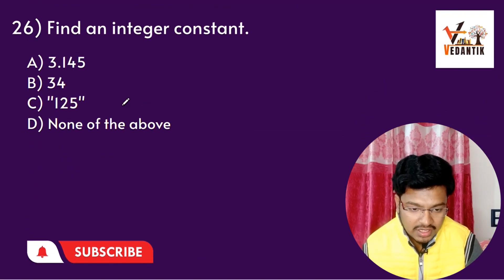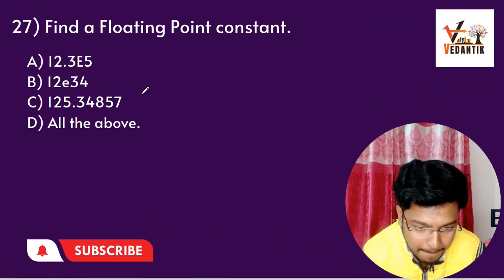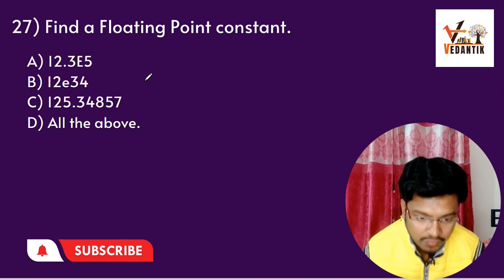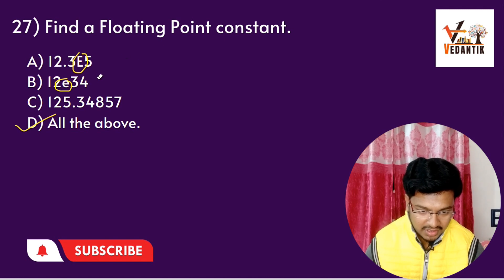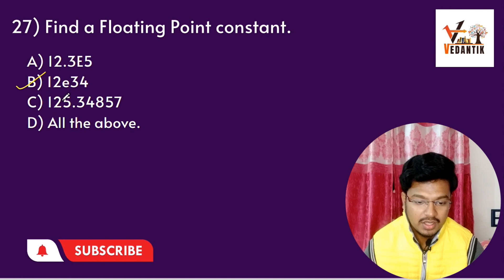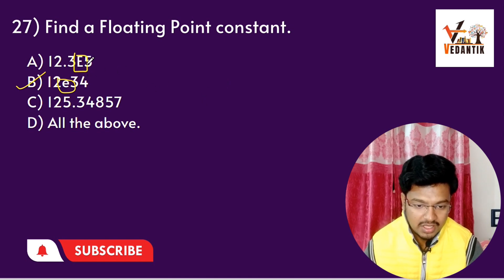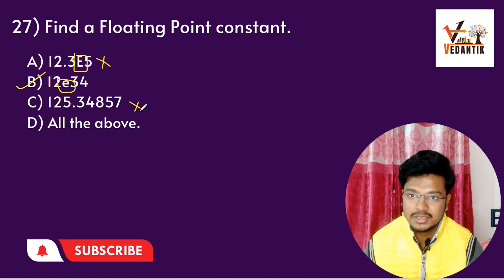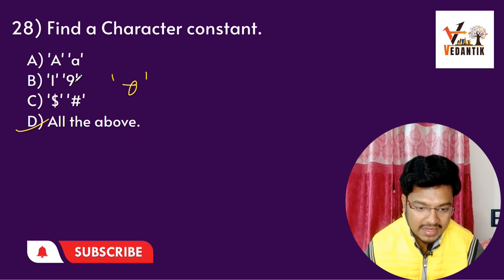Question 21: Find an integer constant. The character option B is 34. Question 22: Find a floating point constant. All of these — with E notation for floating points. The C compiler recognizes floating point constants. Question 23: Find a character constant — character constants use single quotation marks.